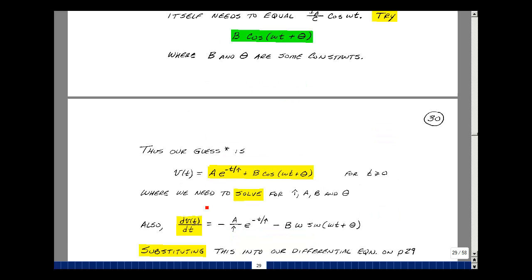Our guess of the solution of the differential equation then would be our A, E to the minus T over tau. This would be B cosine omega T plus theta. We only have four unknowns here. We have A, tau, B, and theta.